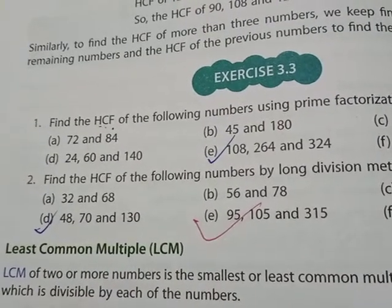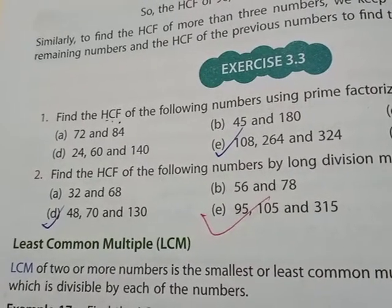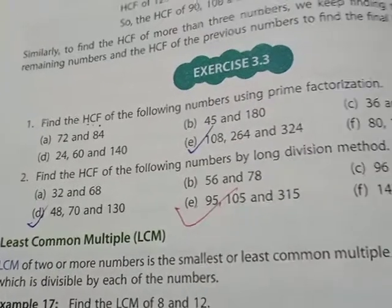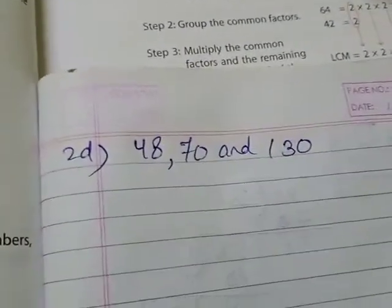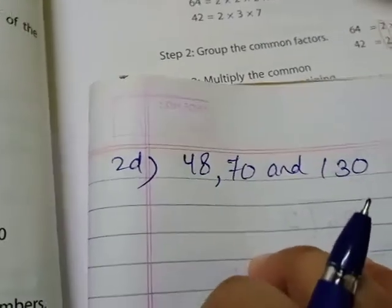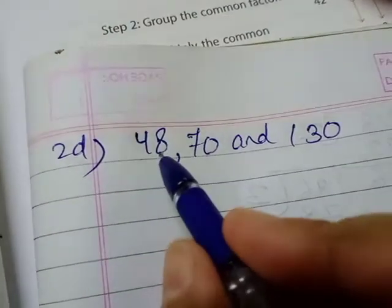Question number 2D: we have to find HCF with long division method when we have three numbers. Pay attention carefully. Here we are having three numbers to find the long division method HCF, so first of all we will solve the first two numbers together.